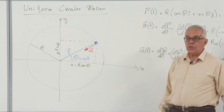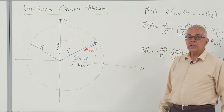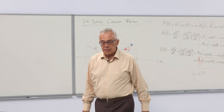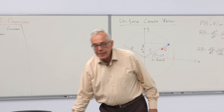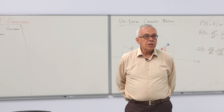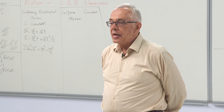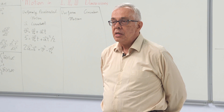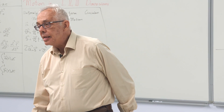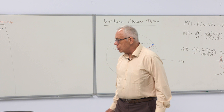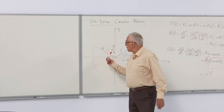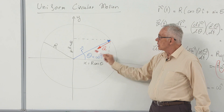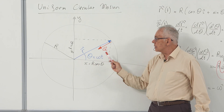In uniform circular motion, the acceleration is centripetal. If you have non-uniform circular motion, you might also have a tangential component of acceleration, but it is still inward. So in circular motion, acceleration is inward, and in uniform circular motion, it is directed directly towards the center.